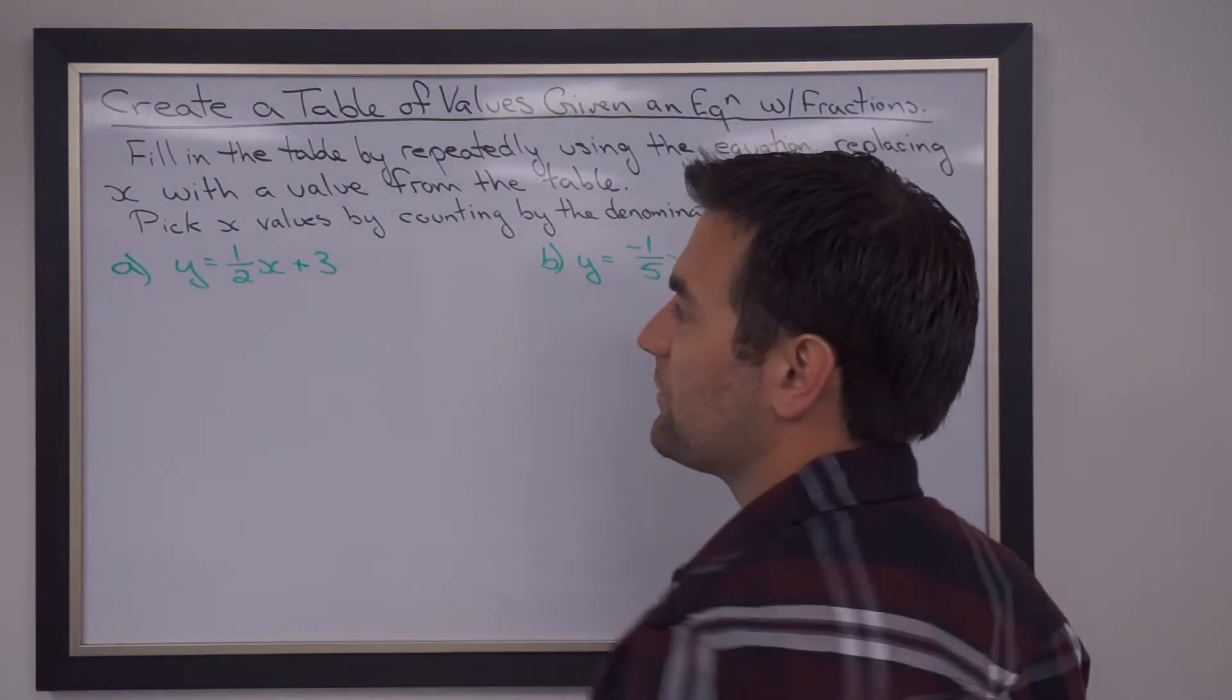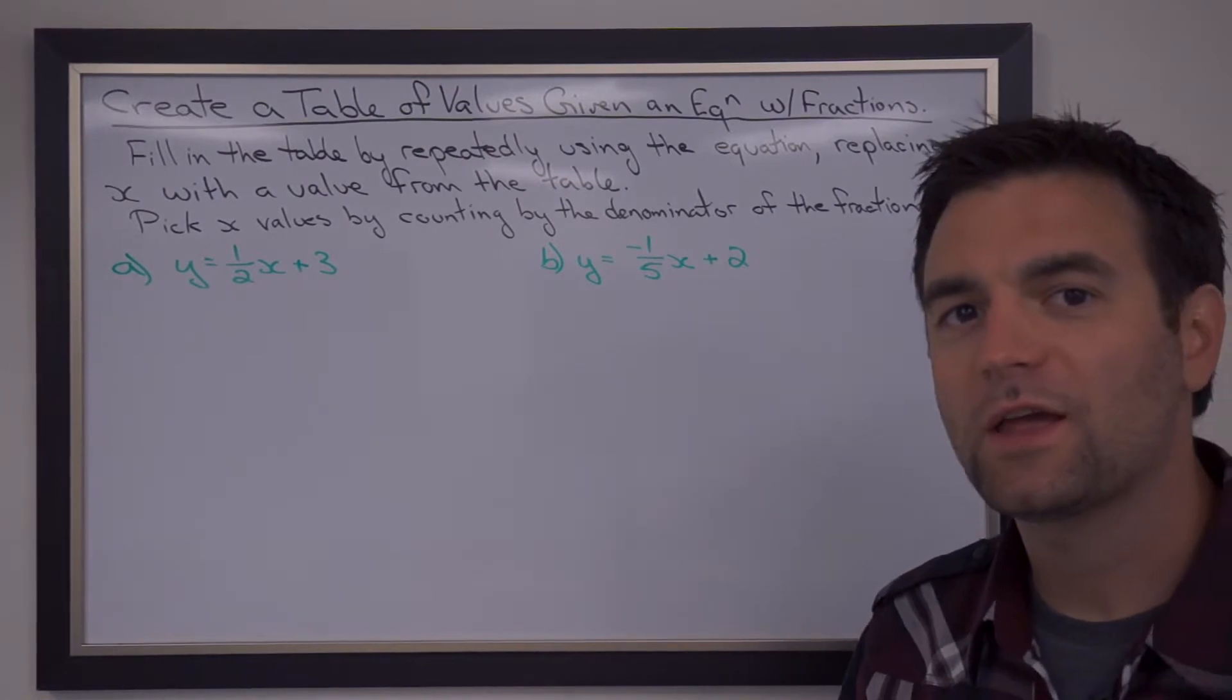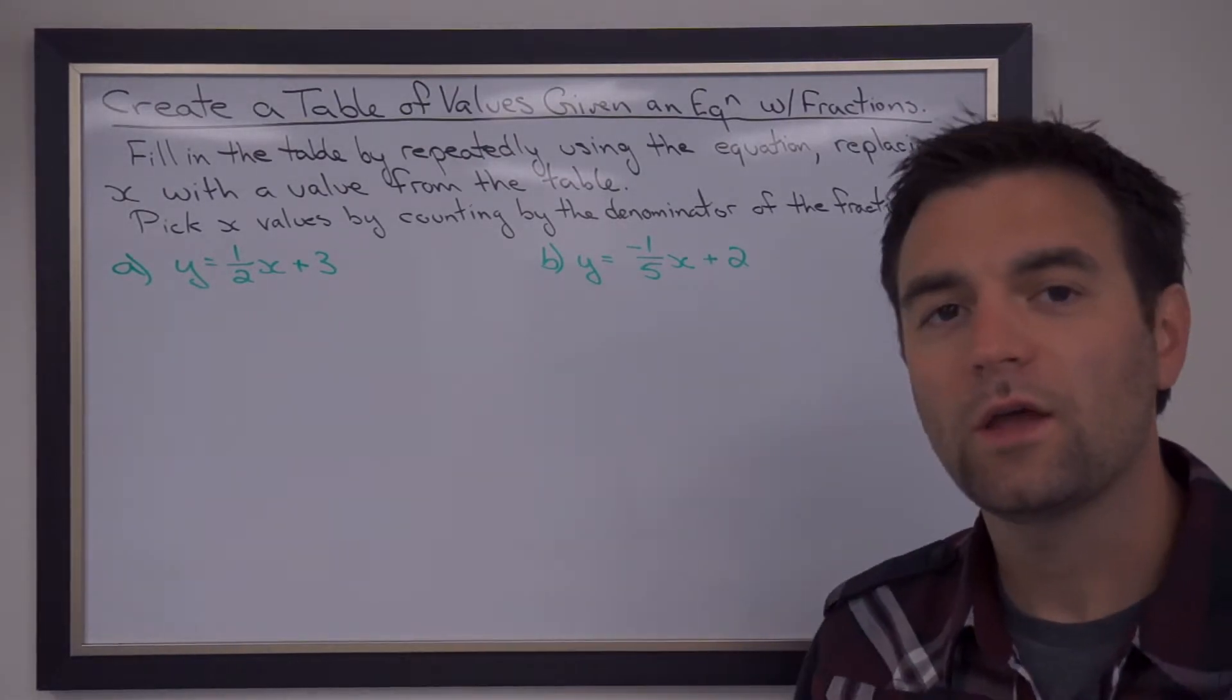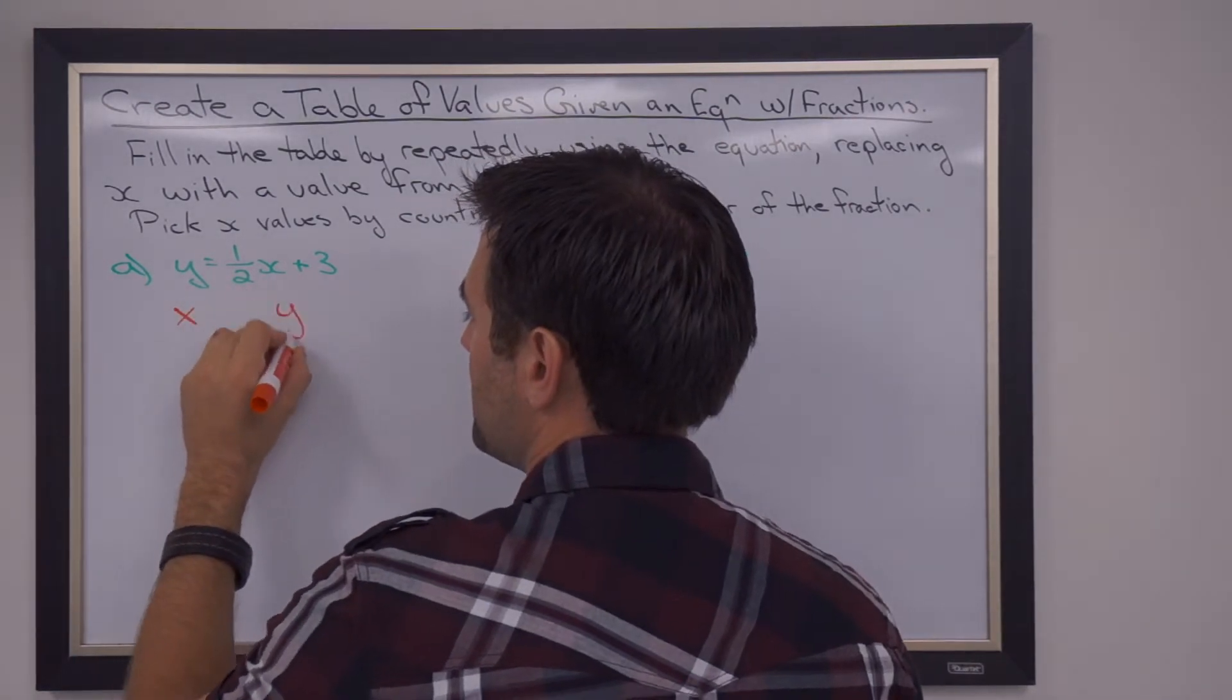So if we take a look at this first equation, y equals one-half x plus three, we're going to count by two in our table of values. So we set it up the same, x, y.